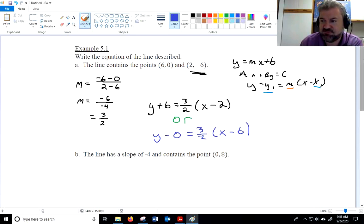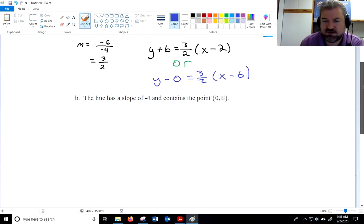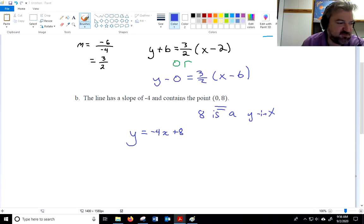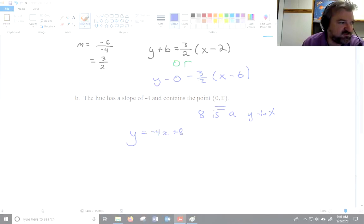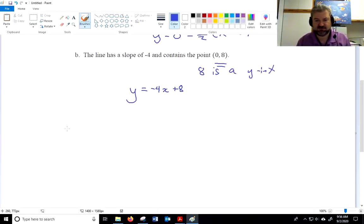All right, let's go on to the next question. The line has a slope of -4 and contains the point (0,8). So I could use point-slope form here as well, but that is a y-intercept. Notice there's a 0 for x. That tells me y=8 is a y-intercept. So I am simply going to use slope-intercept form: y equals -4x plus 8. But if you want to use point-slope form, you can as well. That's totally acceptable.